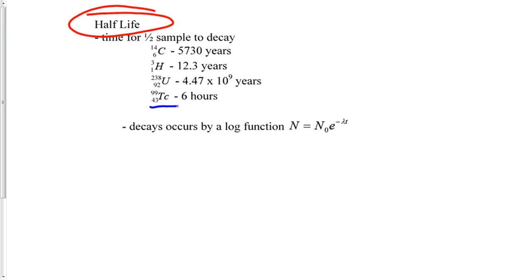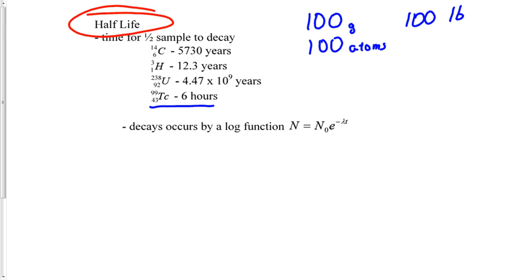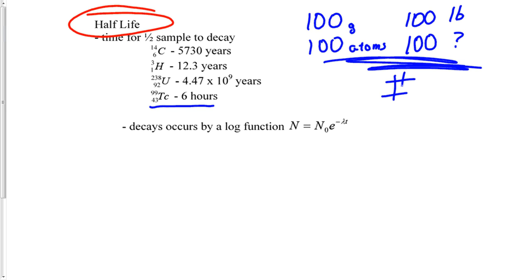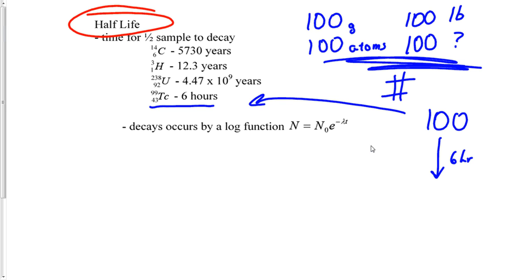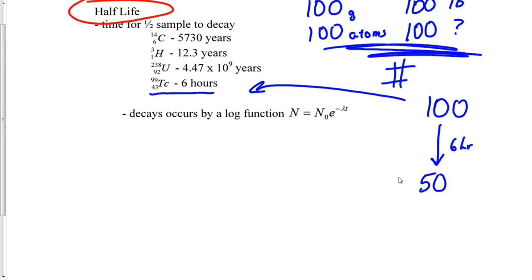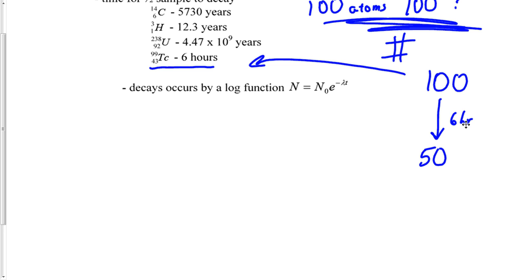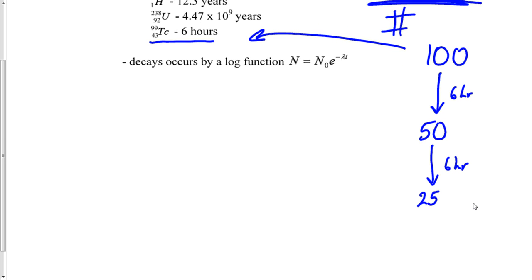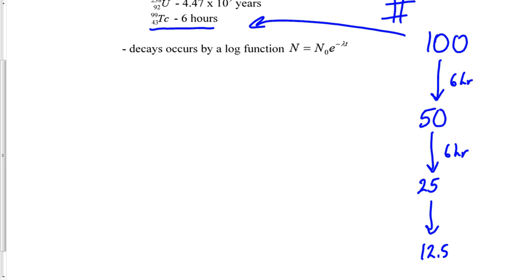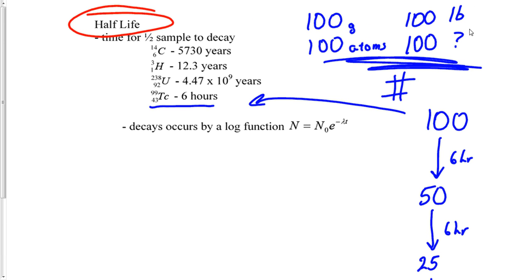Let's look at Technetium because it has only a six-hour half-life. What it means is this: if you started with 100 — and the units don't matter, it could be grams, atoms, pounds — whatever initial number you start with, after six hours what would be left? Half. That's why it's called a half-life. Then after another six hours, you're left with half again — 25. After another six hours you're left with 12.5. So after 18 hours you'd be down to 12.5.